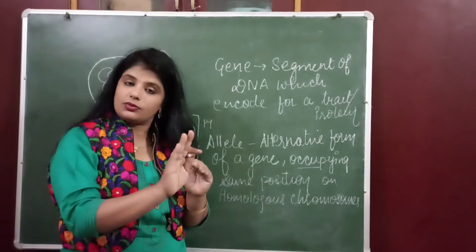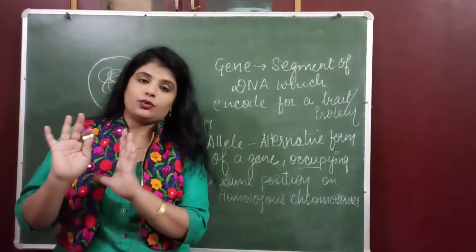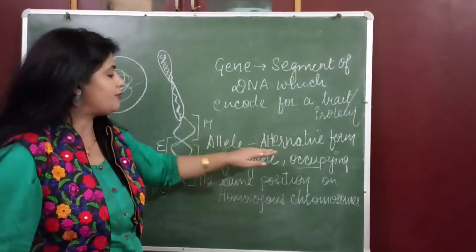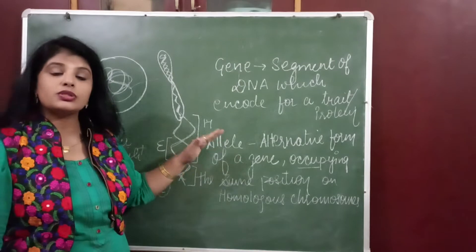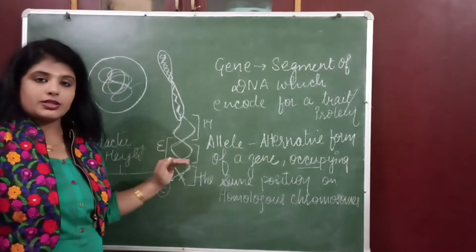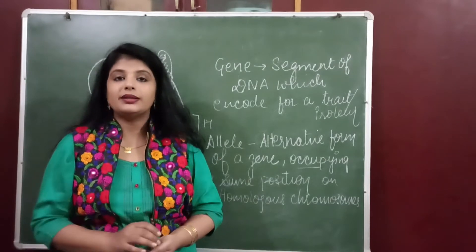So tallness is one allele, shortness is another allele. Two alternative forms of a gene occupying the same position on homologous chromosomes, that is called allele.